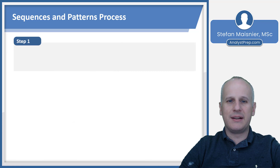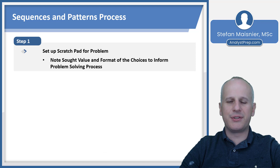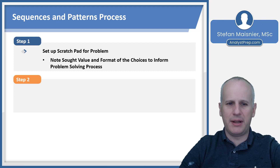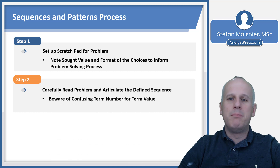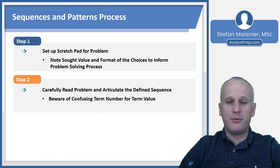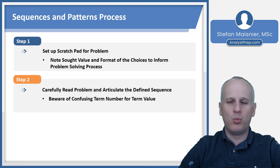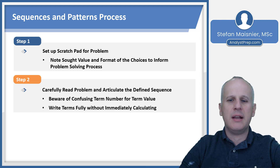To recognize sequences and patterns: Step one, set up the scratch pad for the problem and note the sought value and format of the answer choices, because all tactics could be in play. Step two, carefully read the problem and articulate the sequence. Be very careful not to confuse term number for term value — the subscript versus what's on the right-hand side of the equal sign. Write your terms fully without immediately calculating so you can catch those patterns.